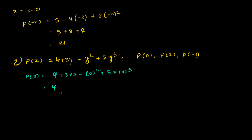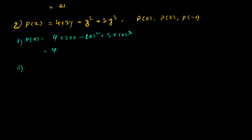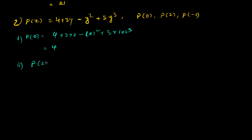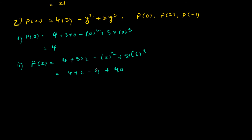For p(2), we replace y with 2: 4 plus 3 times 2 minus 2 squared plus 5 times 2 cubed. That gives 4 plus 6 minus 4 plus 40, so the answer is 46.